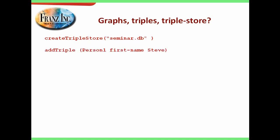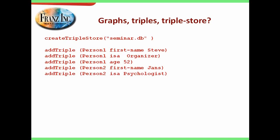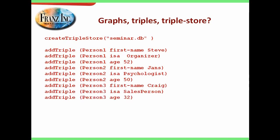You could say there's a person Steve who's an organizer at 52, or Jans is a psychologist at 50, Craig is a person at 32. This is still very regular - why not do this in a relational database? Well, the first big difference is that in a triple store you can add one-to-many relationships incredibly easy, no indirect link tables. You can just add it and because this is the semantic web you can say whatever you want to say.